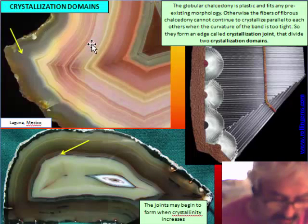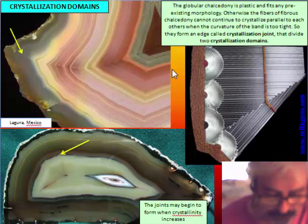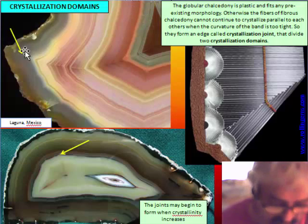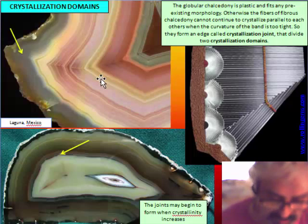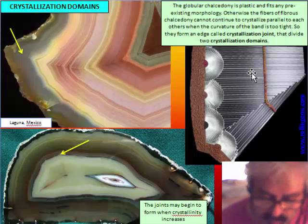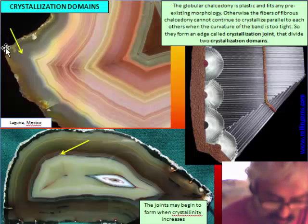We will explain here the crystallization domain. The crystallization domain is a structure formed because globular chalcedony is plastic and fits very well any curve of the cavity, any existing morphology inside the cavity. But on the other hand, fibrous chalcedony is an association of parallel fibers. So it is hard, solid, crystalline, and the fibers are not able to continue staying parallel to each other when the angle is very narrow.